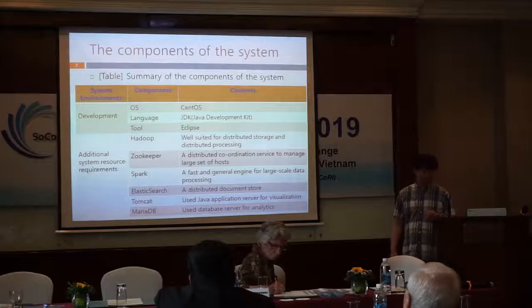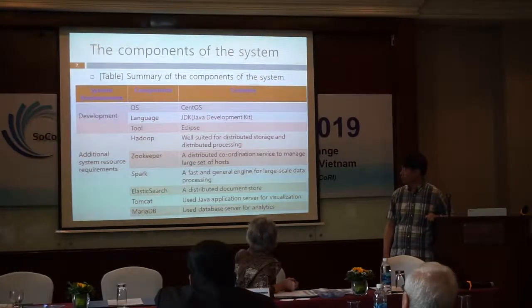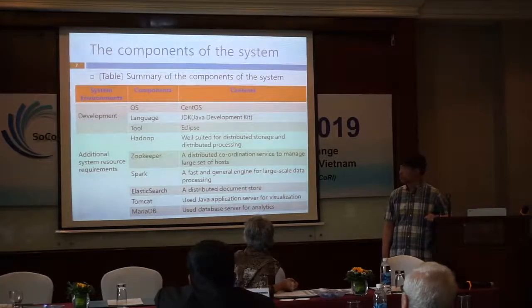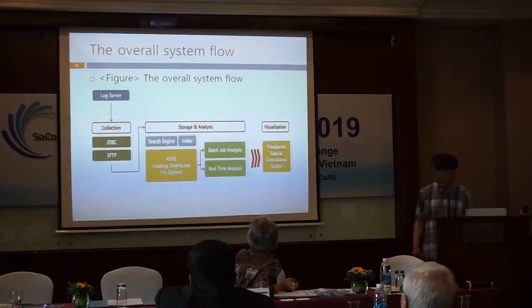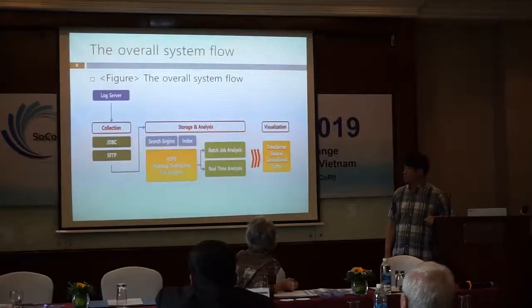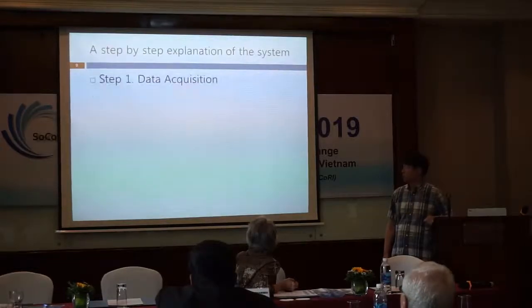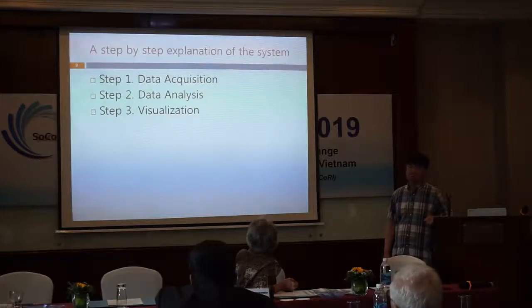This table shows the system requirements. Basically, the proposed system was developed under the Eclipse platform, and the Apache Hadoop project was also implemented. This diagram illustrates the system flow. As I mentioned, our system consists of three steps: data acquisition, data analysis, and visualization. Let's now discuss the logical explanation of what the system is doing in each step.